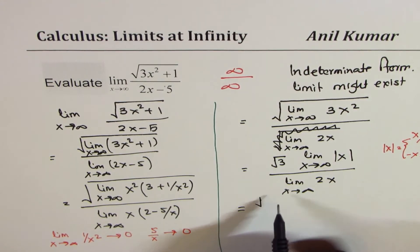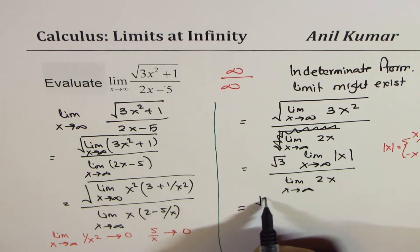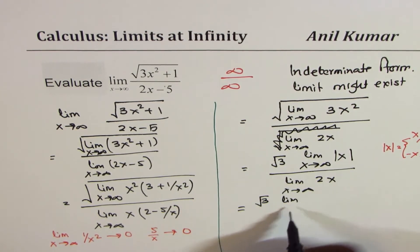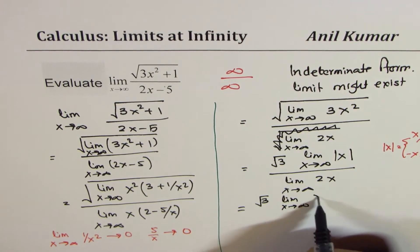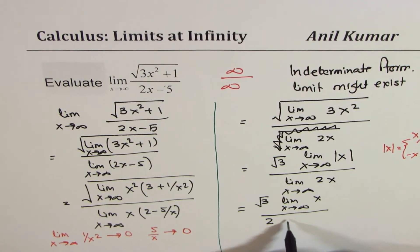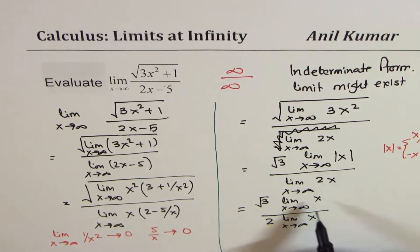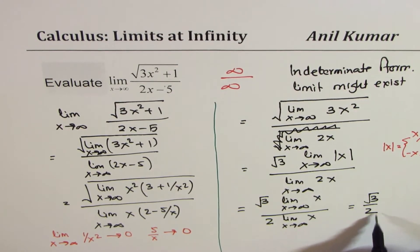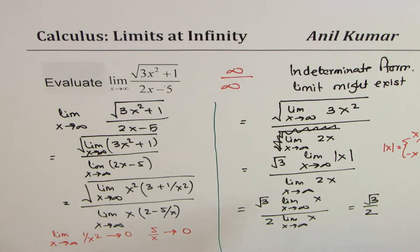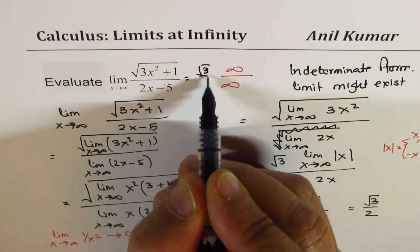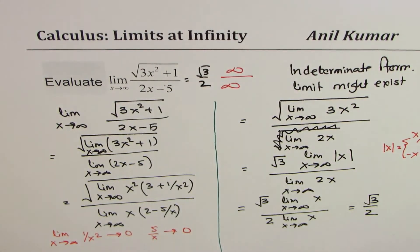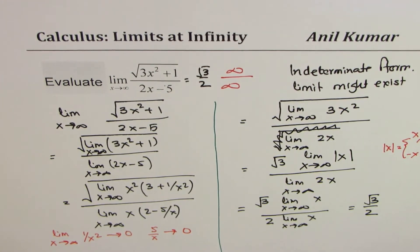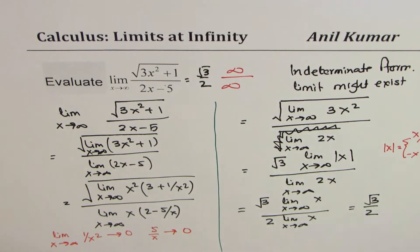The x's cancel out, and we are left with square root of 3 over 2. So the answer for Example A is square root of 3 over 2. That is how you find the limit for this function using properties of limits.